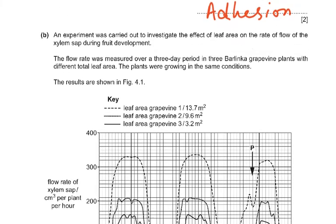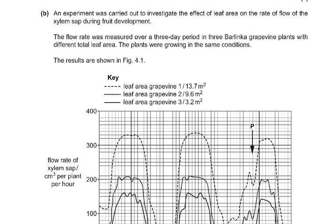The B part of the question: an experiment was carried out to investigate the effect of leaf area on the rate of flow of xylem sap during fruit development. This is slightly out of syllabus, but I want to discuss it because xerophytic leaves are still in your syllabus. So this question is slightly irrelevant to the present-day syllabus.